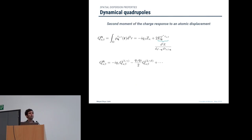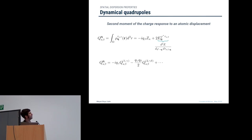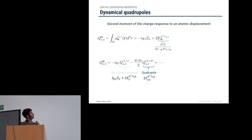What about the dynamical quadrupoles? These objects are formally the second moment of the charge response to an atomic displacement. This charge response can be calculated as the cell integral of the charge density response to an atomic displacement, which has a lattice contribution and an electronic contribution obtained as a second-order energy derivative with respect to a scalar potential and an atomic displacement. A long-wave expansion at first order in q gives the Born effective charges, while at second order we get the dynamical quadrupoles.